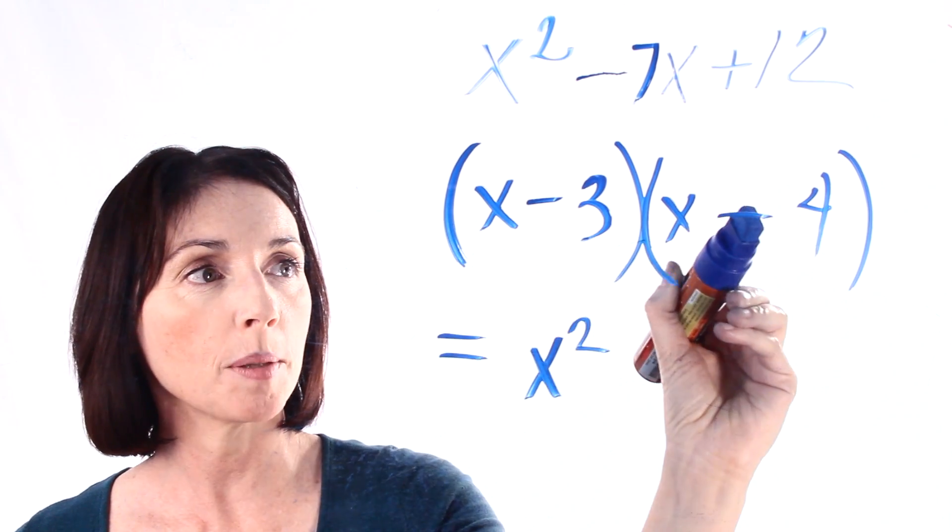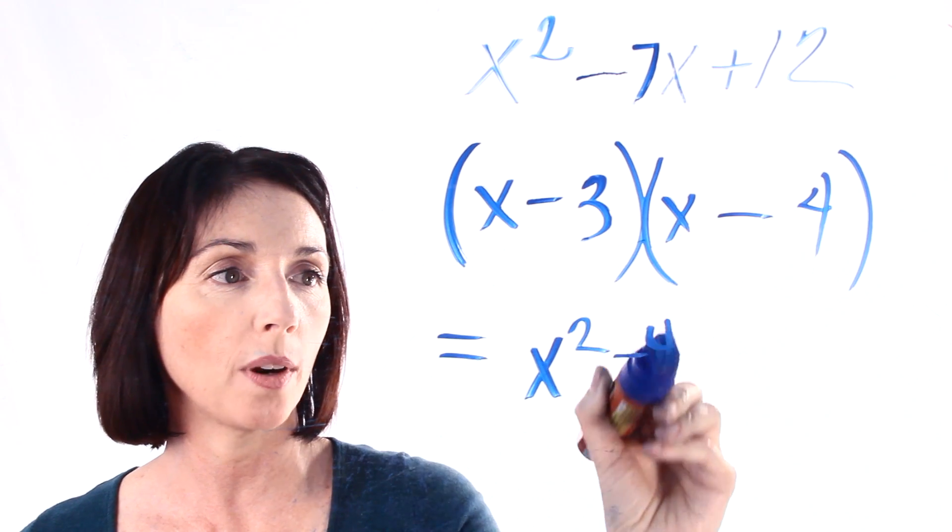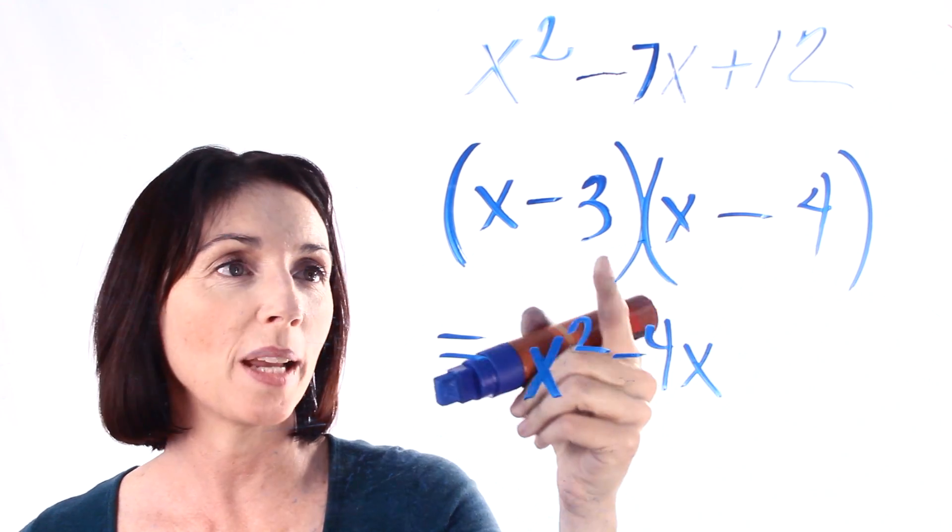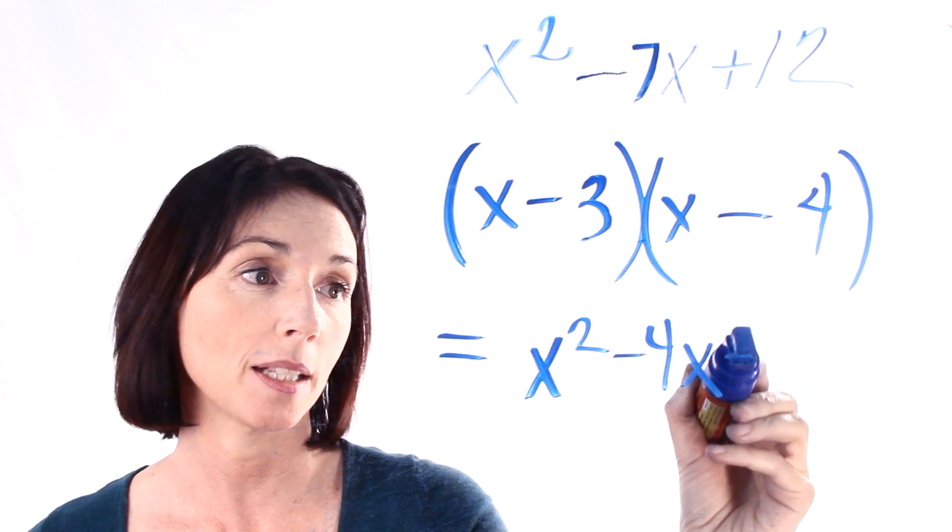Now we have an x times a minus 4. That gives us minus 4x. Now here we have minus 3 times x. That's minus 3x.